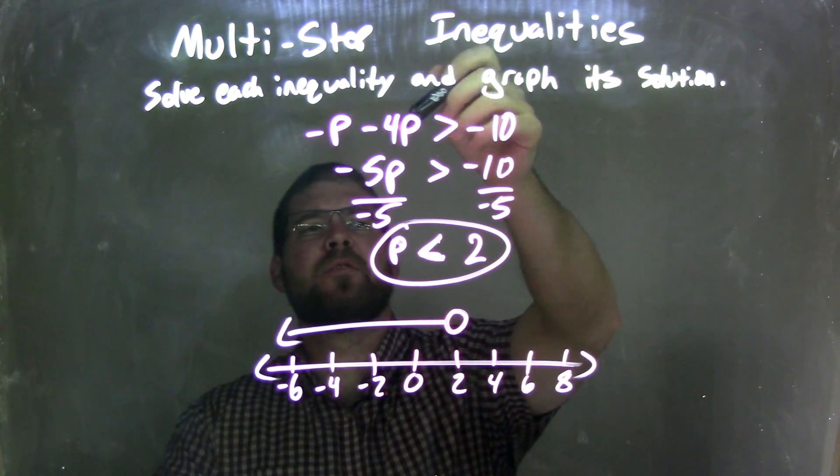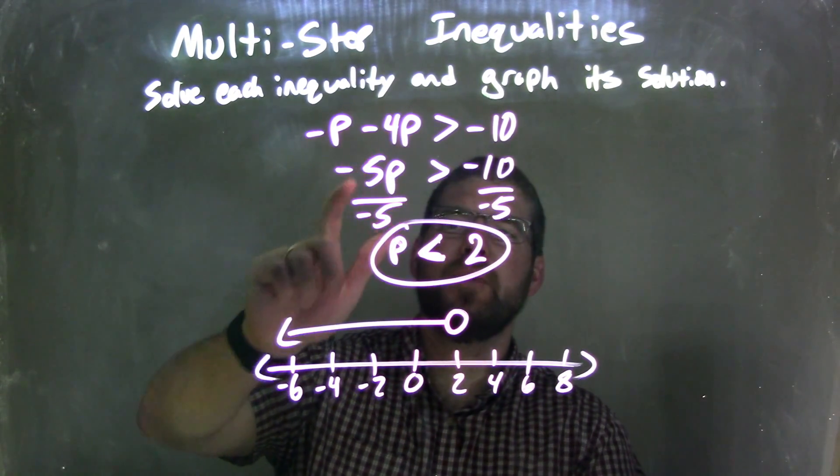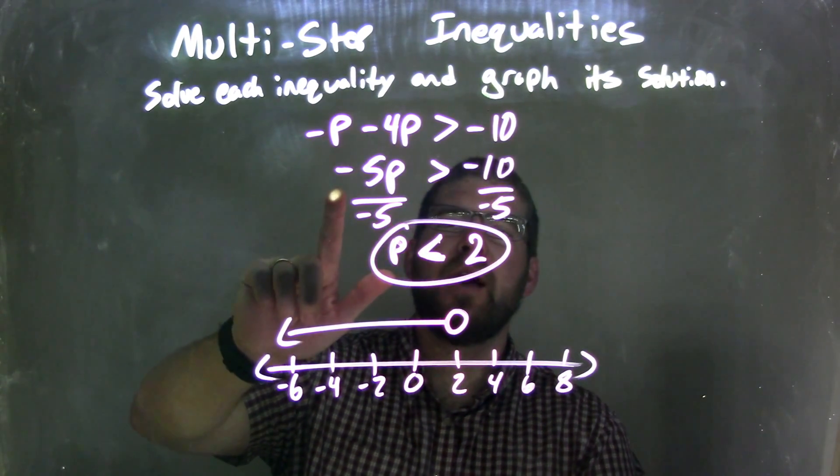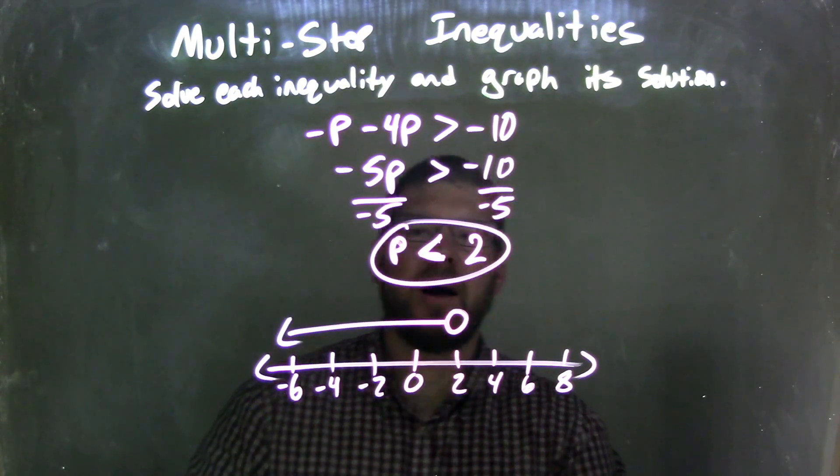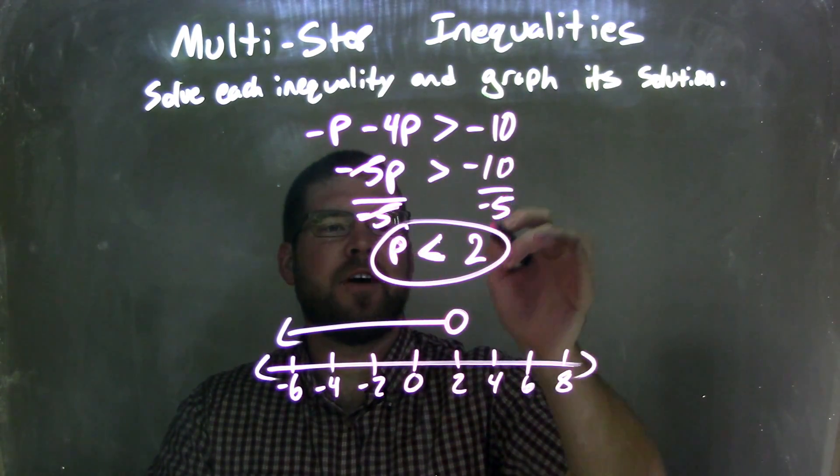Let's recap. We were given negative P minus 4P is greater than negative 10. I combined negative P and negative 4P to get negative 5P. Then I divided both sides by negative 5, isolating P, and negative 10 divided by negative 5 equals positive 2.